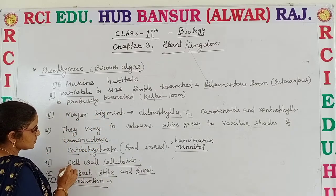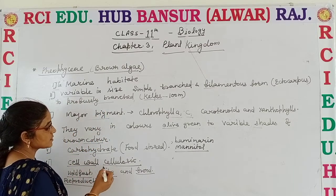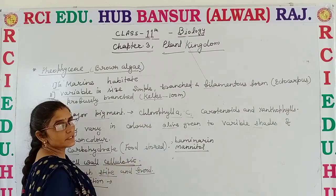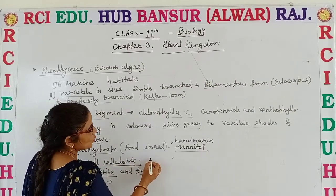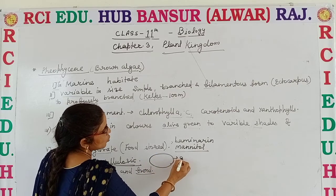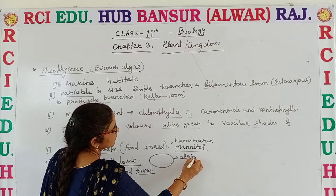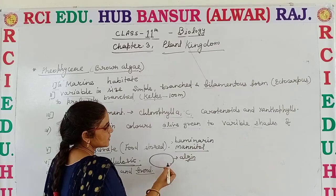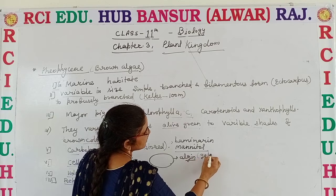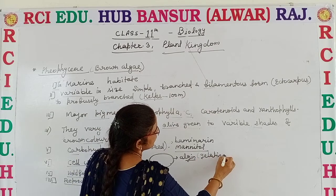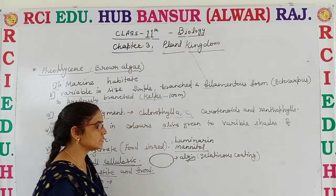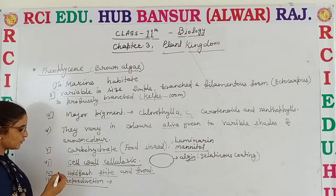The cell wall consists of cellulose, and the cell wall is cellulosic, which is also surrounded with a gelatinous substance known as Algin. So the cellulosic cell wall is surrounded with a gelatinous coating that is known as Algin.